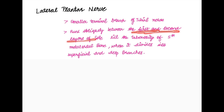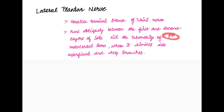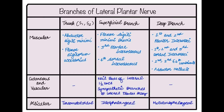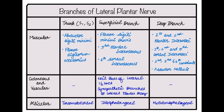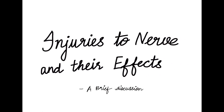The lateral plantar nerve is the smaller terminal branch. It runs obliquely between the first and second layers of the sole to the tuberosity of the fifth metatarsal bone, where it divides into superficial and deep branches. It supplies the abductor digiti minimi, flexor digitorum accessorius, and several other muscles, along with articular, cutaneous, and vascular branches.